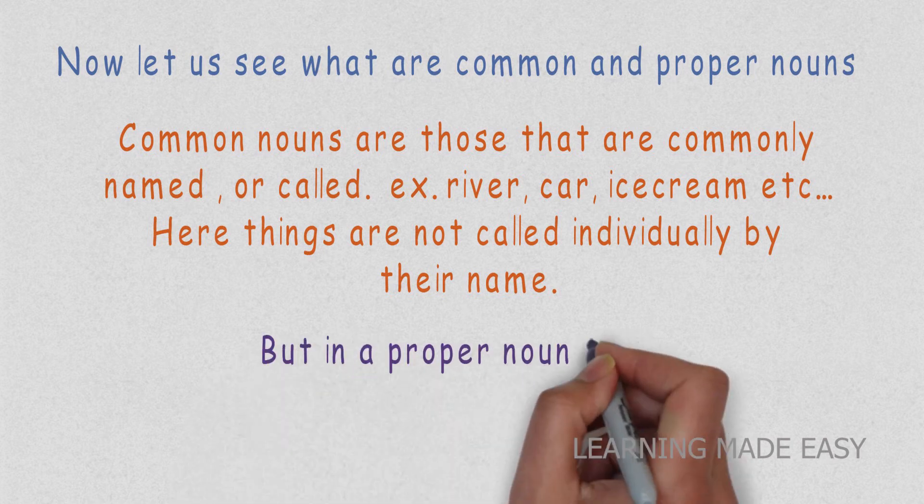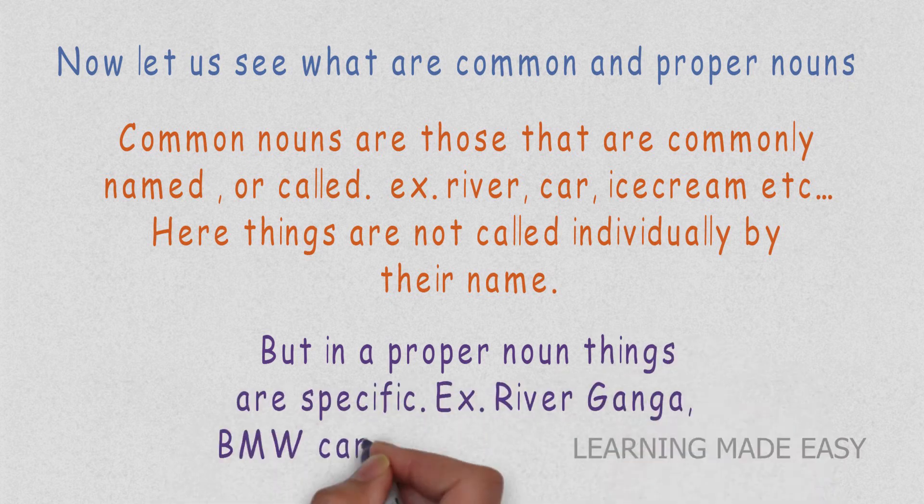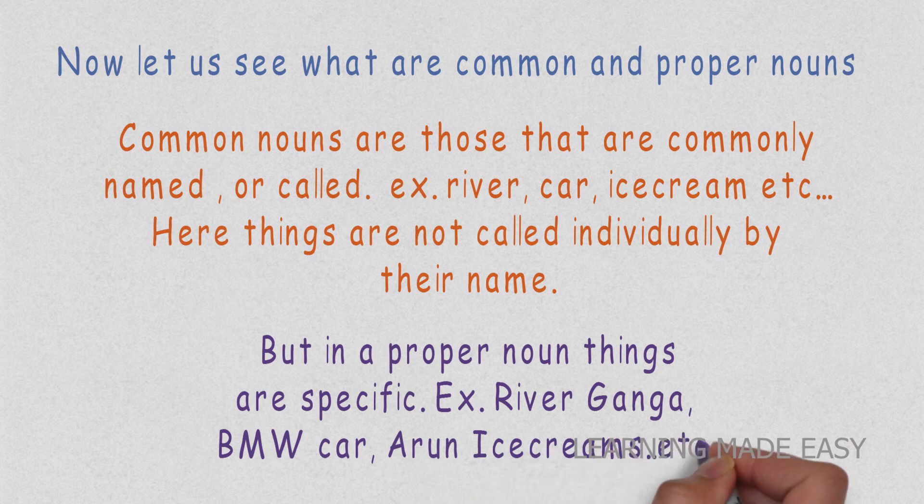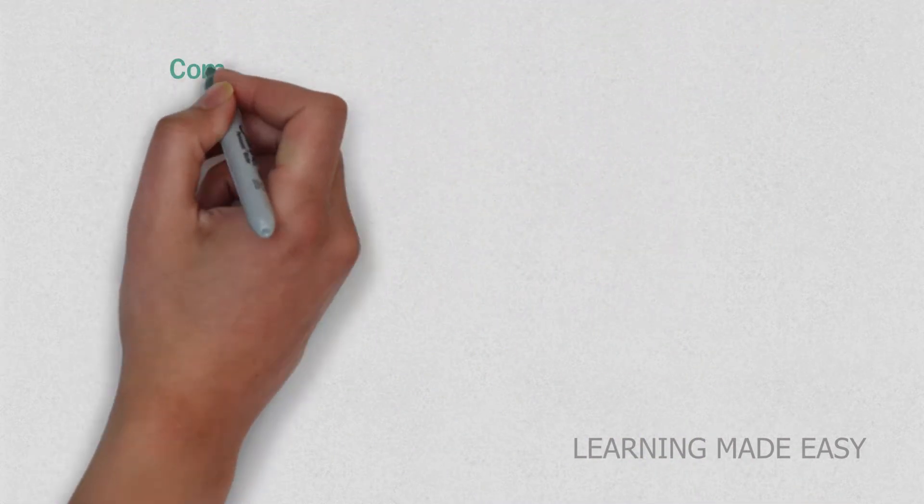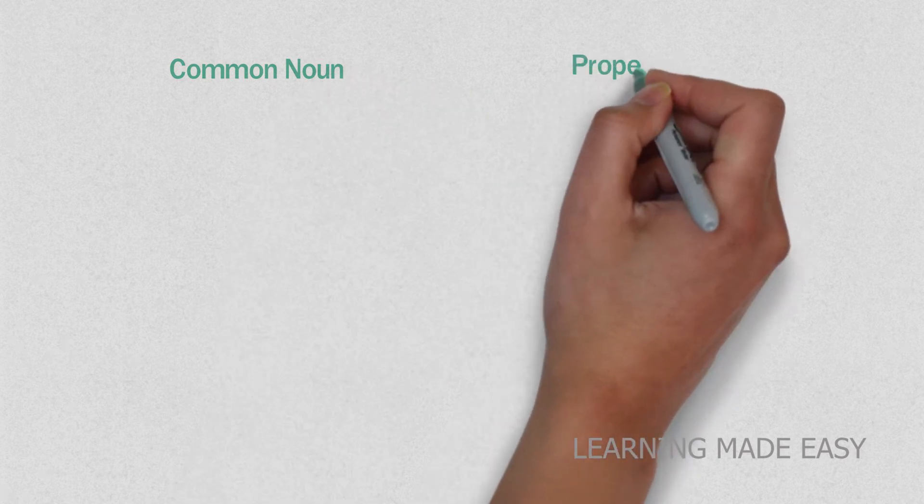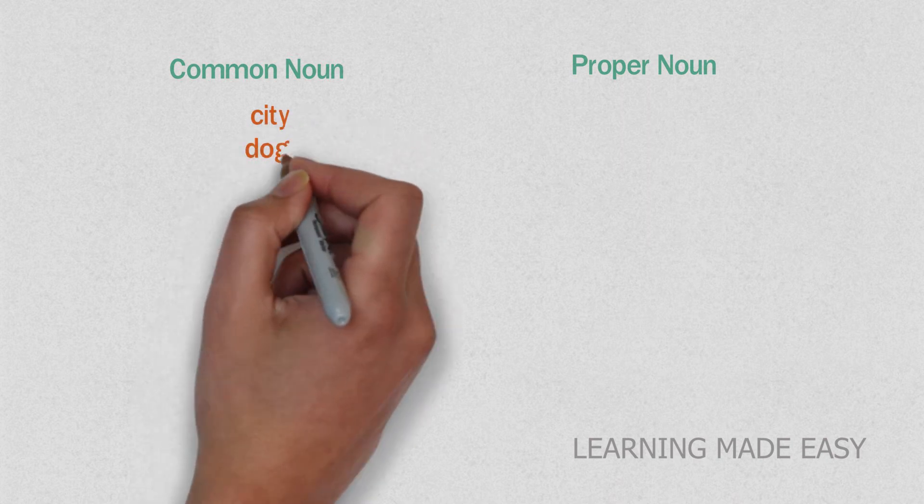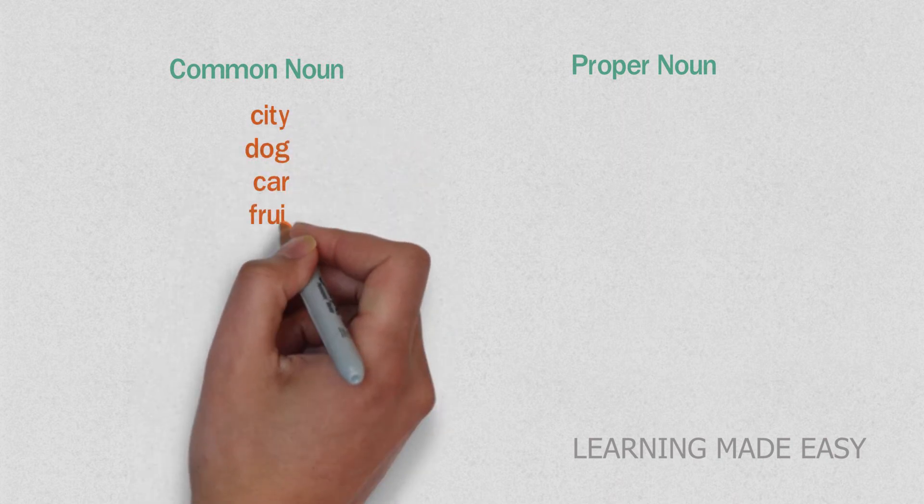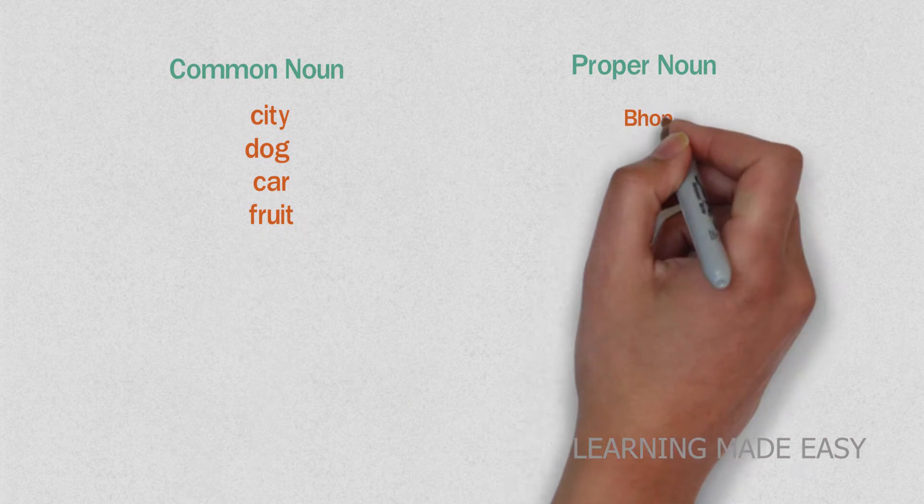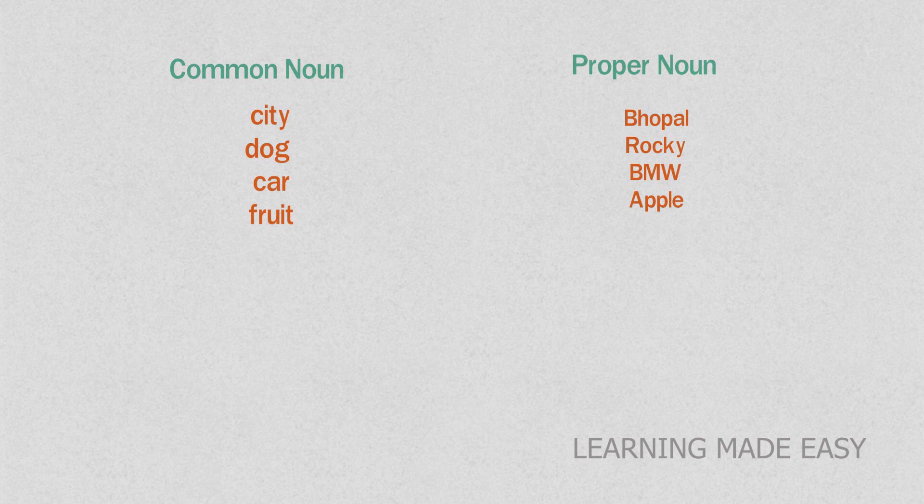But in a proper noun, things are specific. Examples: river Ganga, BMW car, Arun ice creams, etc. I'm gonna note down two columns—one for common noun and the other for proper noun. For common noun we have city, dog, car, fruit. And for proper noun we have Bhopal, Rocky, BMW, Apple.